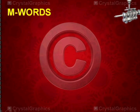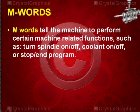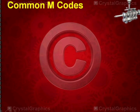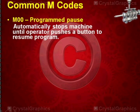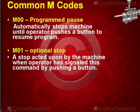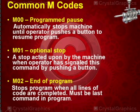Now let us discuss M words. M words tell the machine to perform certain machine-related functions such as turn spindle on or off, coolant on or off, or stop or end program. M00 is programmed pause, which automatically stops the machine until operator pushes a button to resume. M01 is optional stop, acted upon when operator has signaled this command. M02 is end of program, which stops the program when all lines of code are completed and must be the last command.